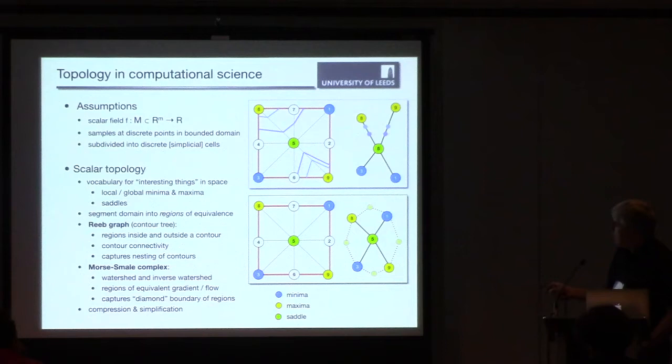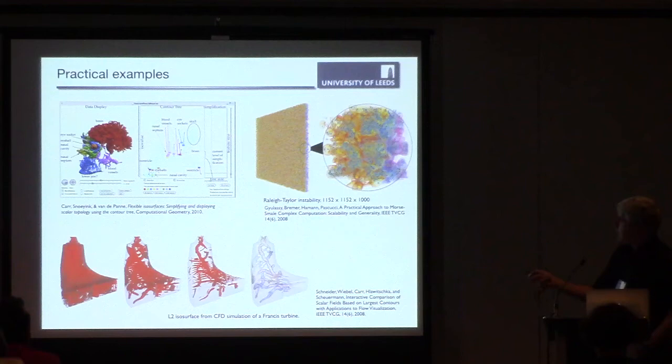Similarly, the Morse-Smale complex is an abstraction that captures information about gradients. So if you know the watershed algorithm for looking at where within a field flow occurs, flow goes from maxima down towards minima. What the Morse-Smale complex captures is the structure of how that flow is divided into regions which are in 2D diamonds, in 3D octahedral crystals.